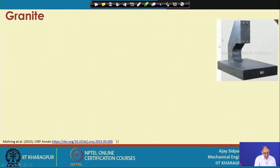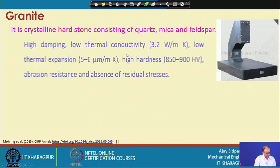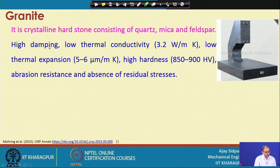Granite is a crystalline, hard stone consisting of quartz, mica, and feldspar. Its important properties include: high damping — it absorbs vibrations without propagating them to another material; low thermal conductivity of 0.2 W/m·K; and low thermal expansion, expanding 5 to 6 microns per meter per degree Kelvin change.